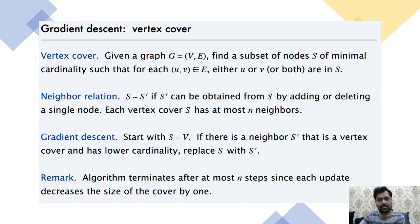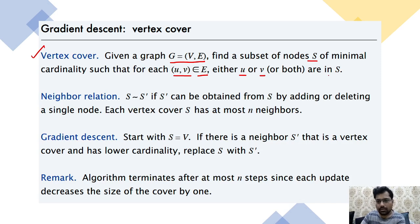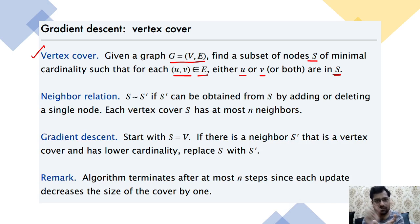Next, we apply this concept to vertex cover. The definition: given a graph with vertices and edges, find a subset of nodes — call it S — of minimal cardinality such that for each edge (u, v) in the set of edges, either u or v or both are inside S. S is the minimum set of vertices that covers all edges.